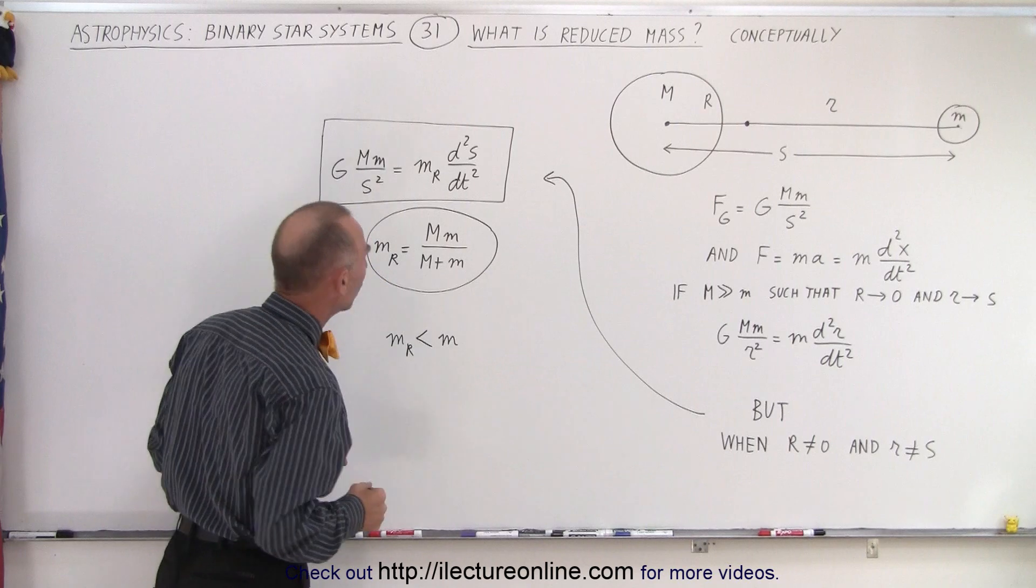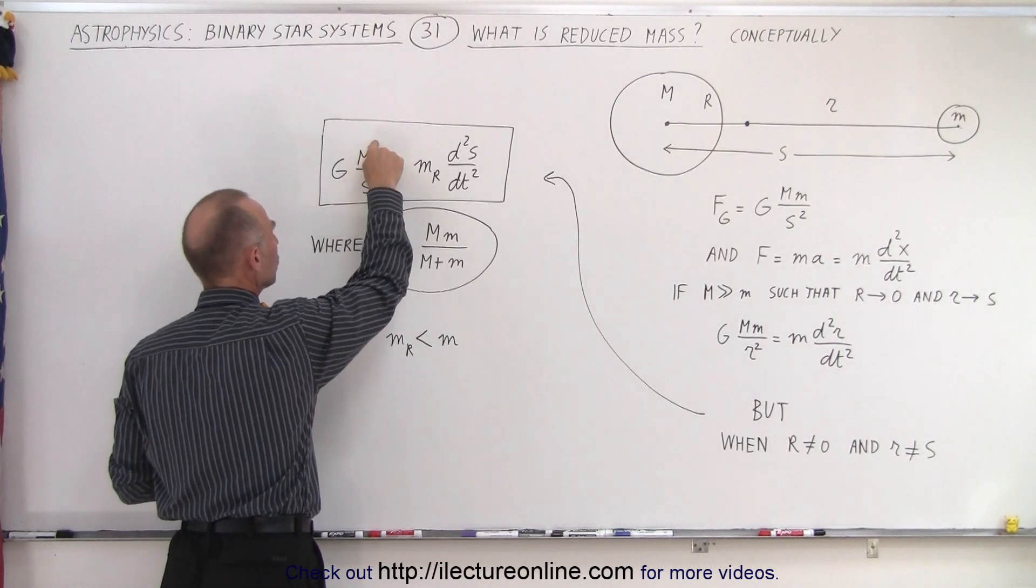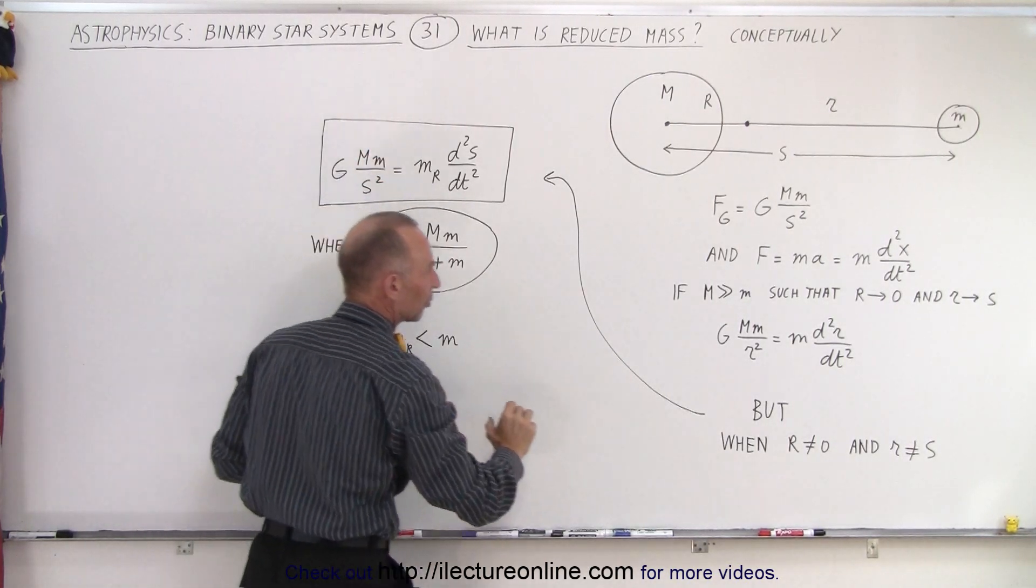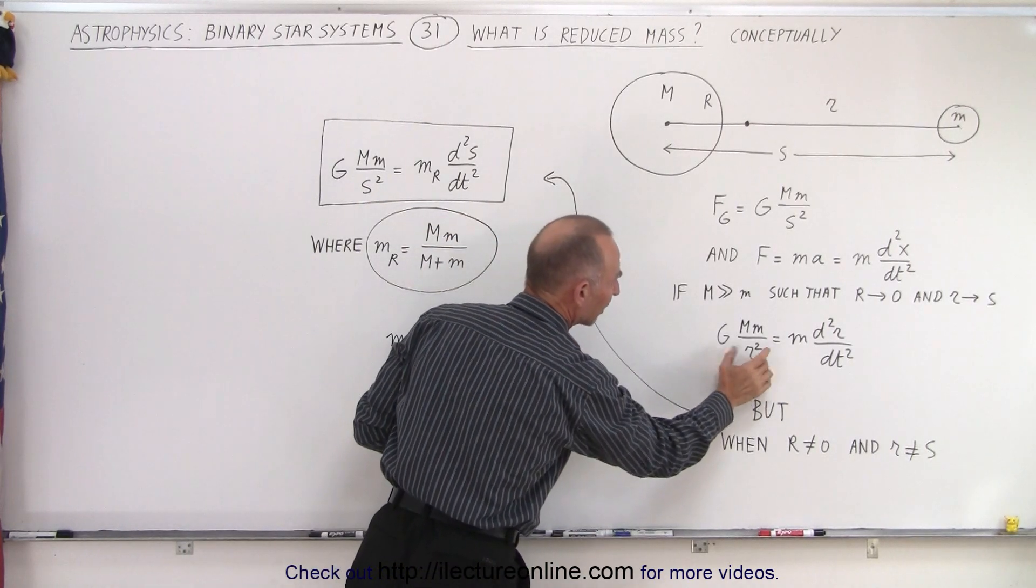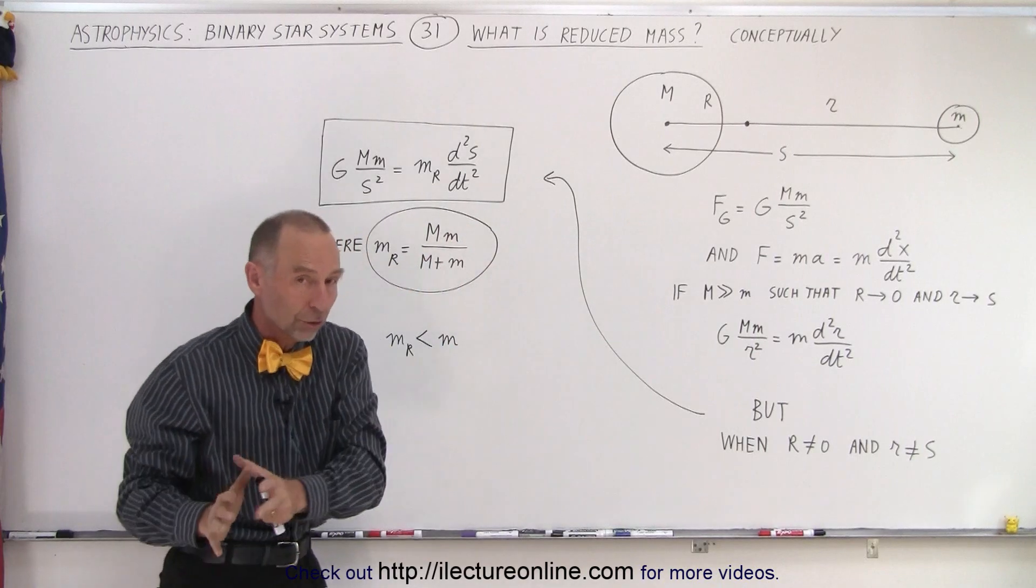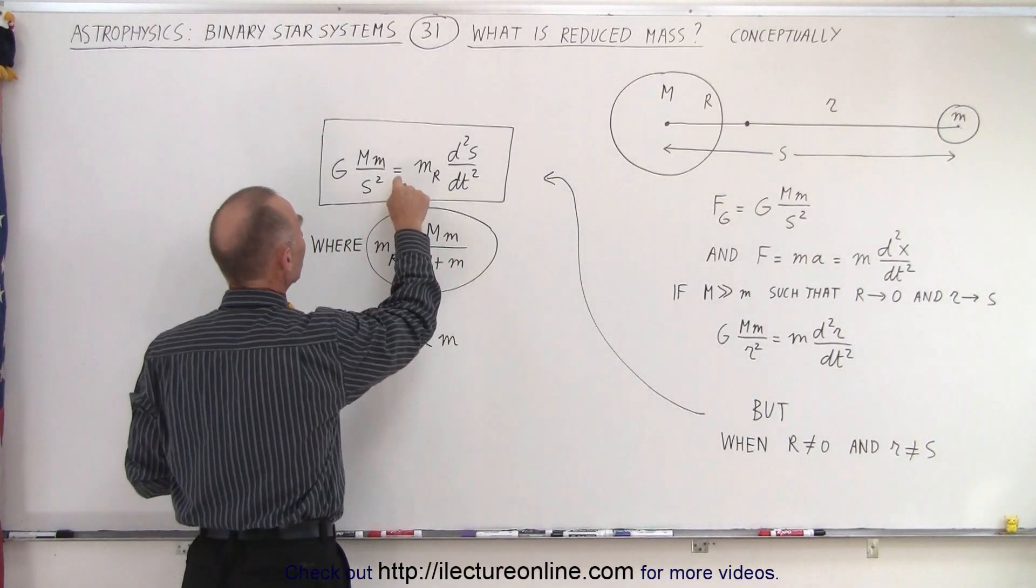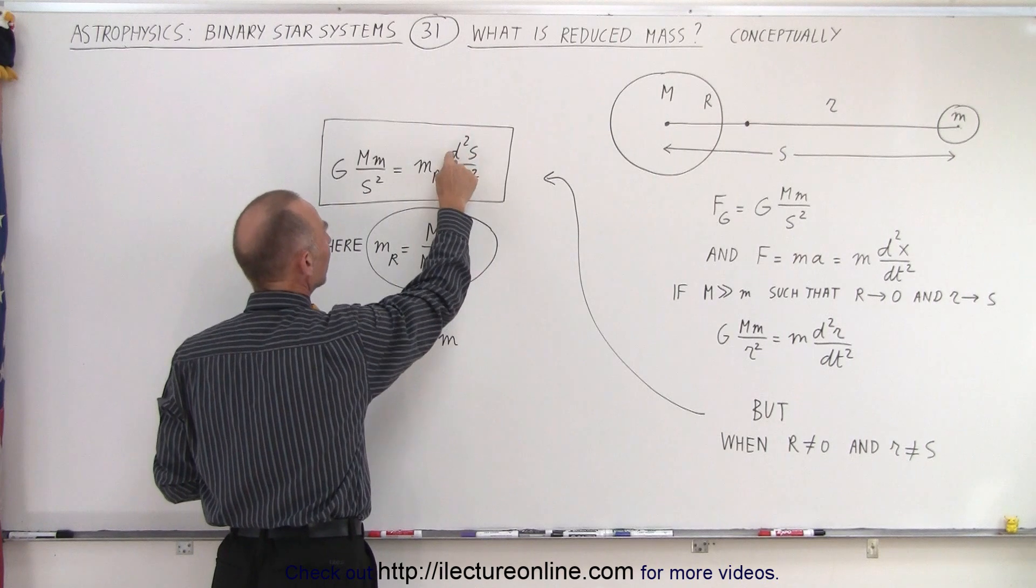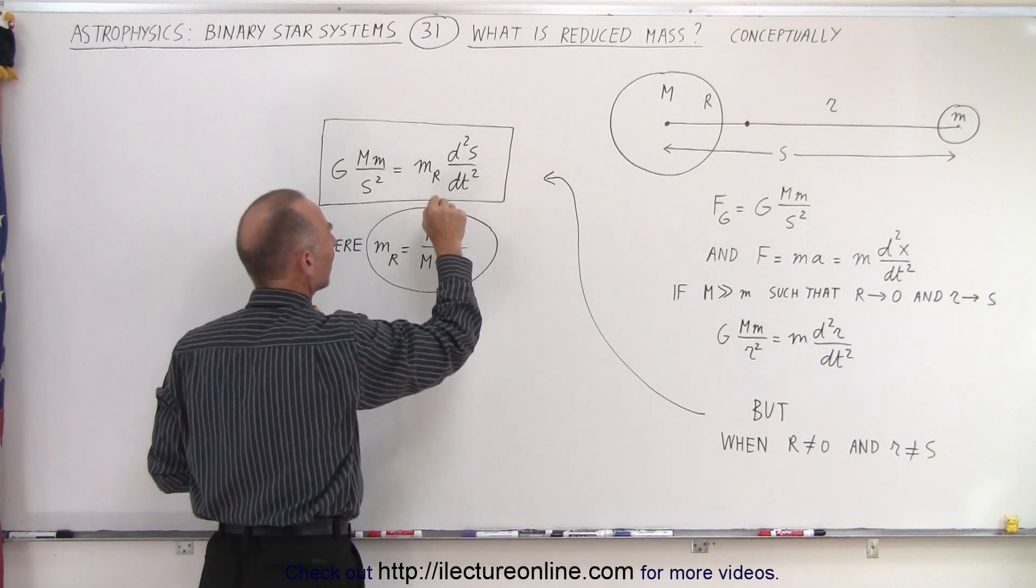When we take the very same equation, we end up with G times the product of two masses divided by s squared, which is of course what we have here, except we're going to replace r squared by s squared, since r is no longer equal to s, and that must equal the reduced mass times the second derivative with respect to time of s.